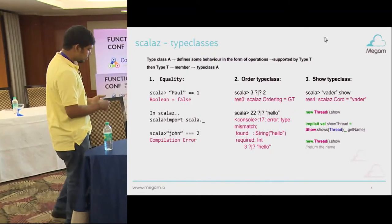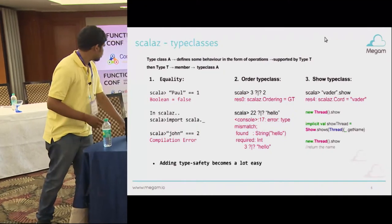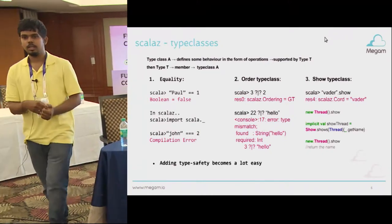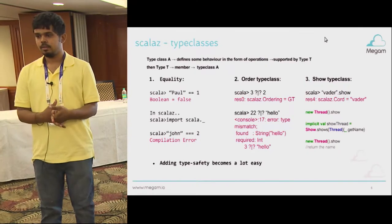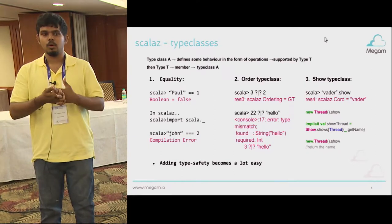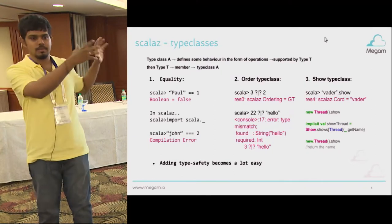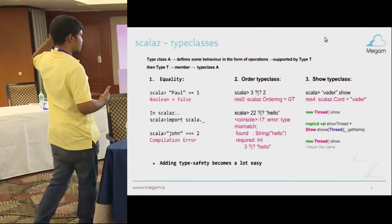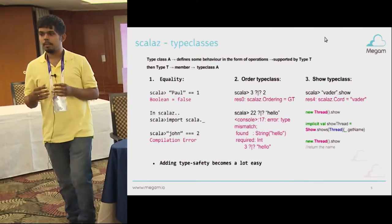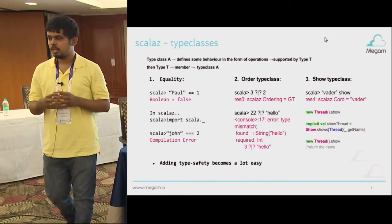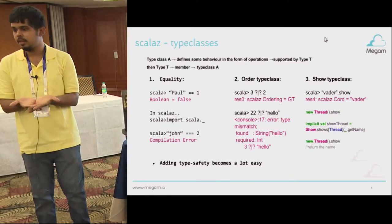The point I'm trying to make here is that adding type safety becomes a lot easier — your code becomes type safe. What happens is you figure out the bugs at compile time itself, which is great.